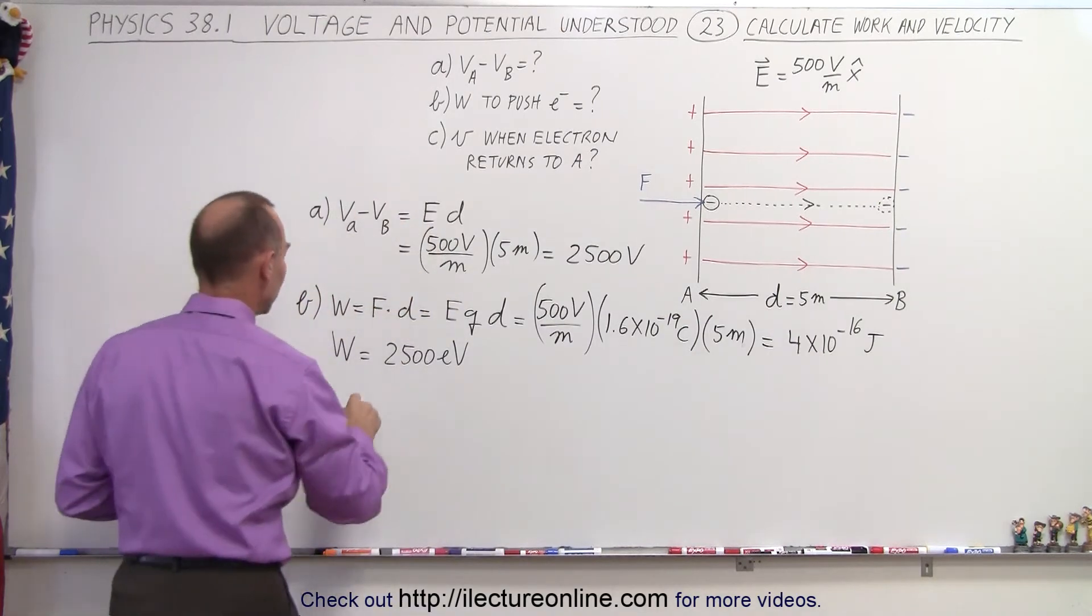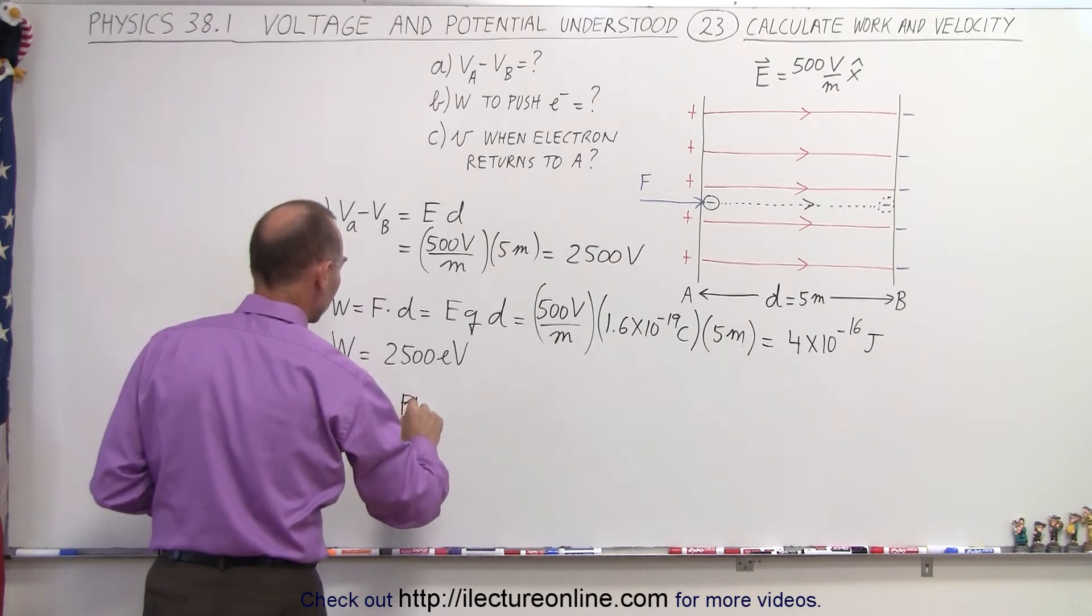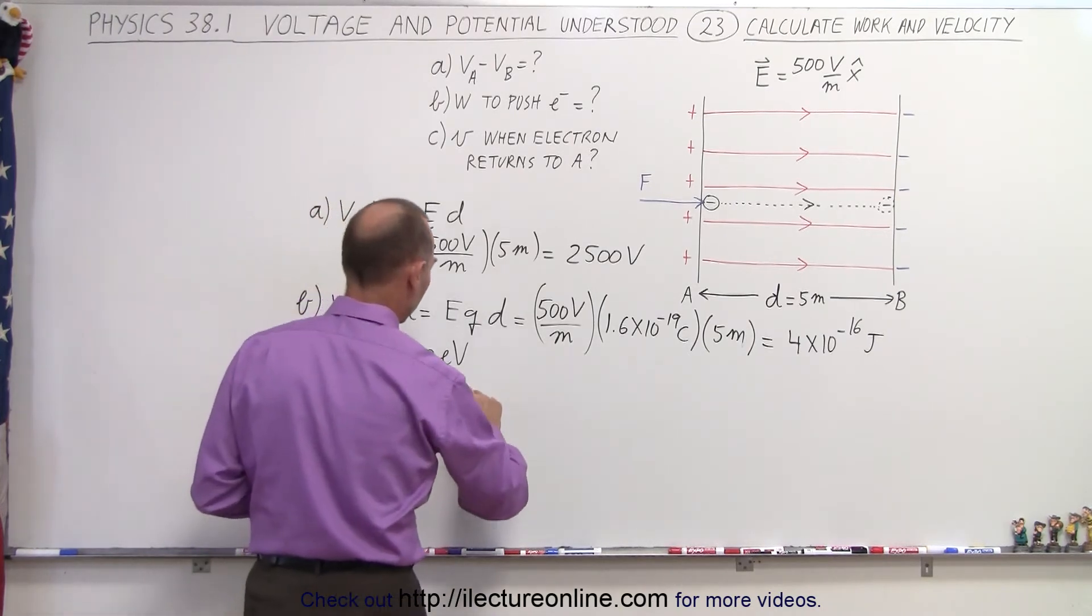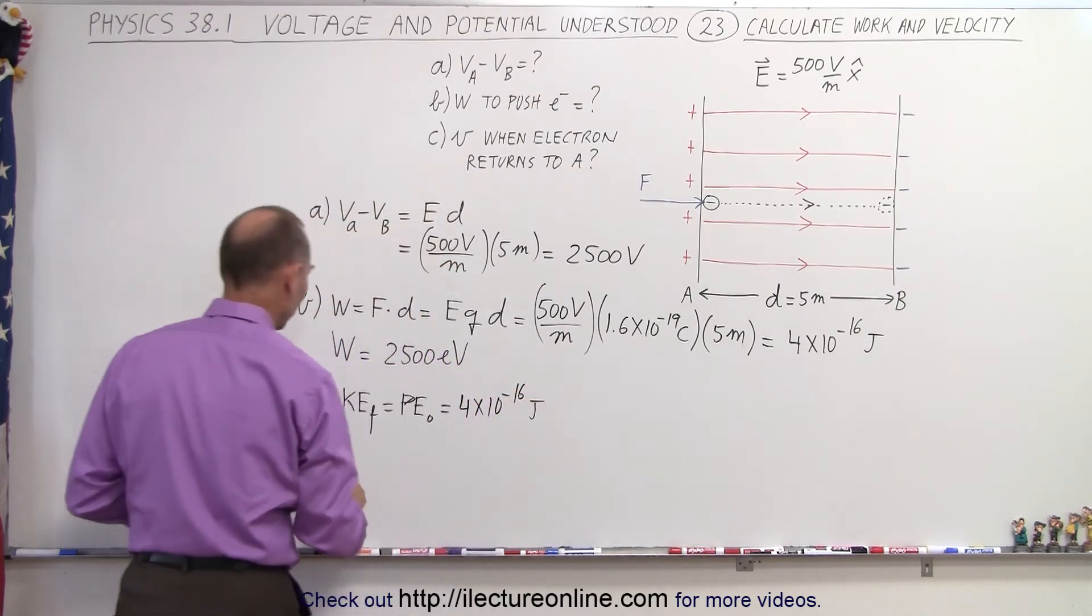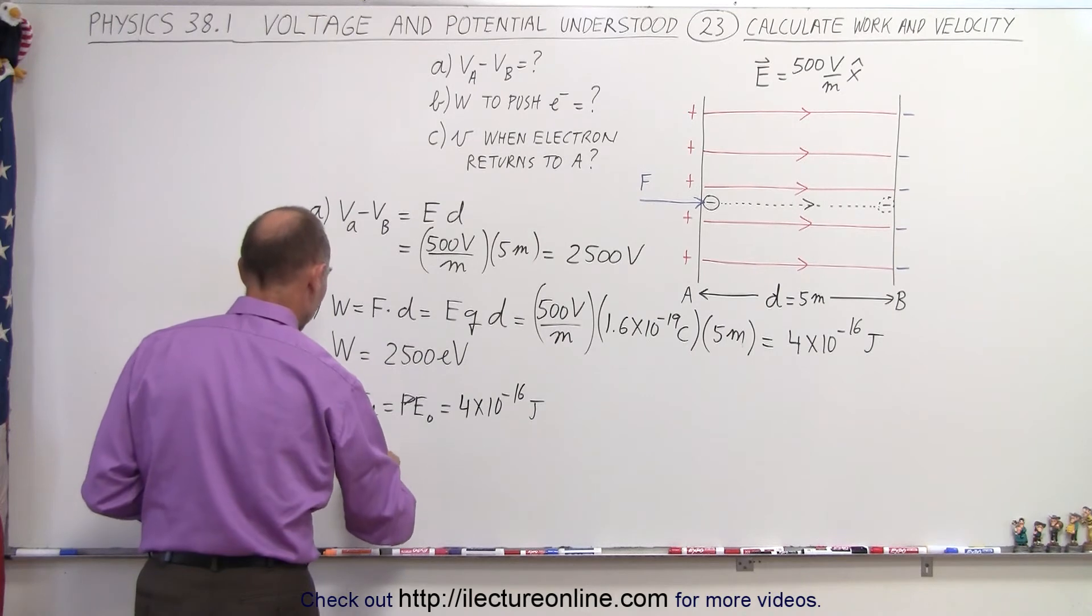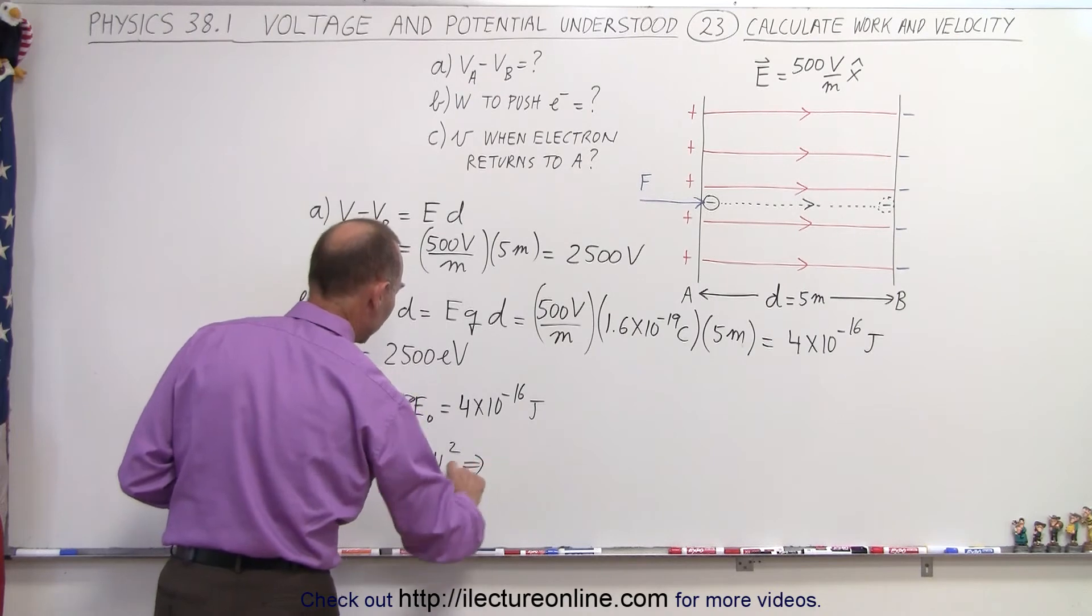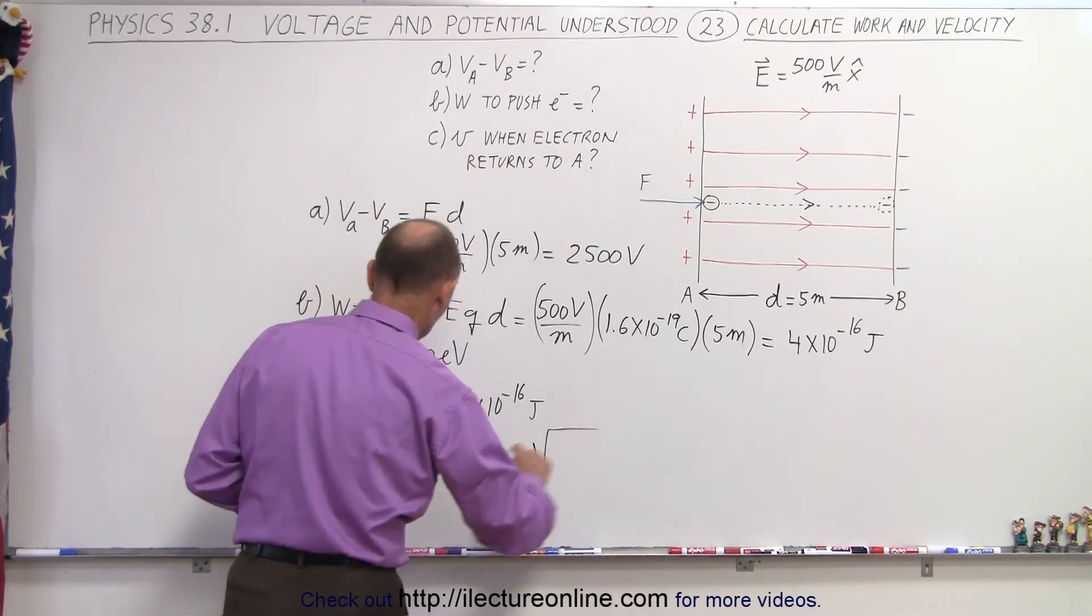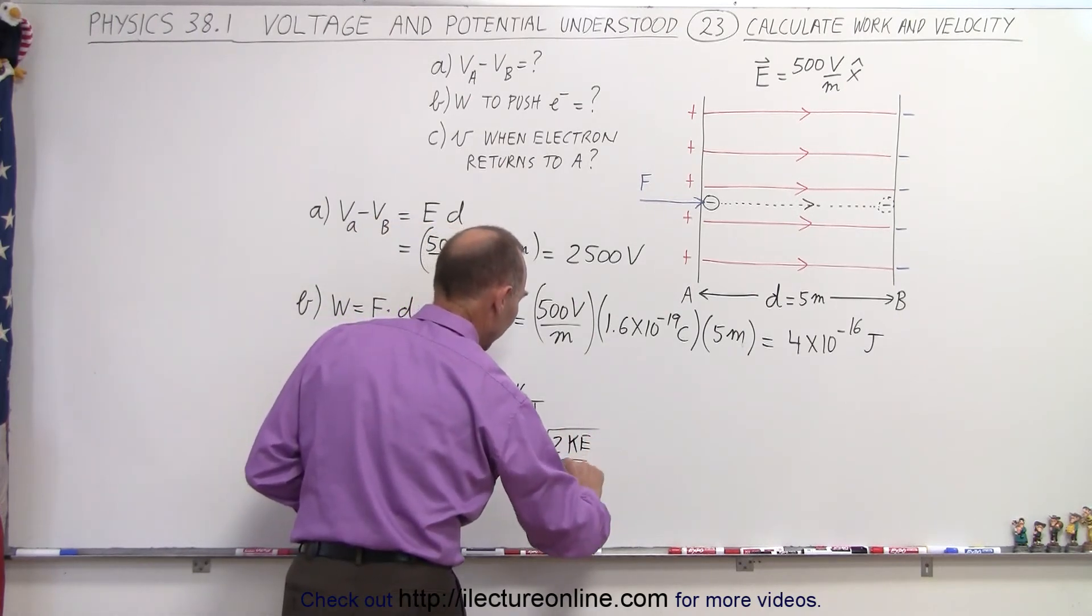The kinetic energy at the end will be equal to the initial potential energy at the beginning, which is equal to 4 times 10 to the minus 16 joules. So we can say that kinetic energy by definition is equal to 1 half mv squared, which means if we solve this for V, we get V is equal to the square root of 2 times the kinetic energy divided by the mass.